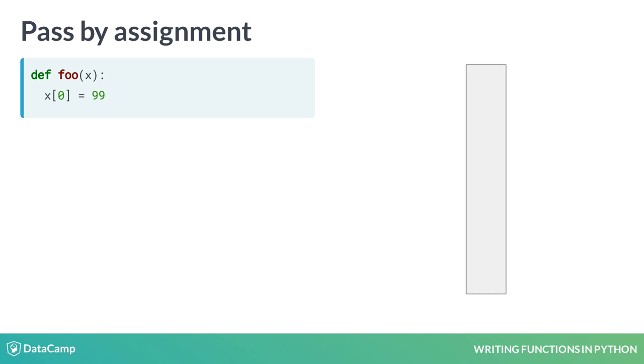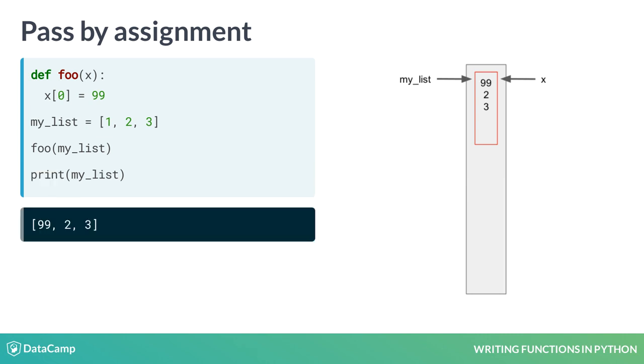How does this relate to the example functions we saw earlier? When we assign a list to the variable mylist, it sets up a location in memory for it. Then, when we pass mylist to the function foo, the parameter x gets assigned to that same location. So, when the function modifies the thing that x points to, it is also modifying the thing that mylist points to.